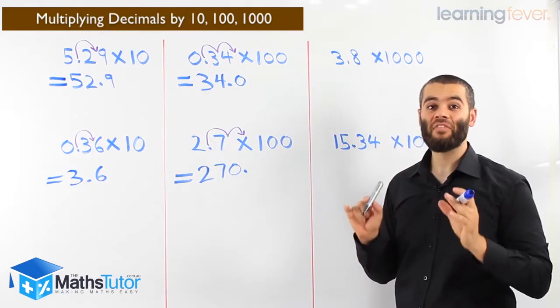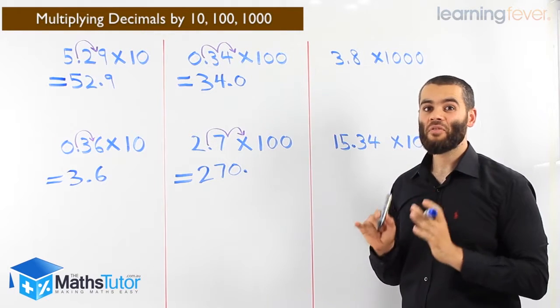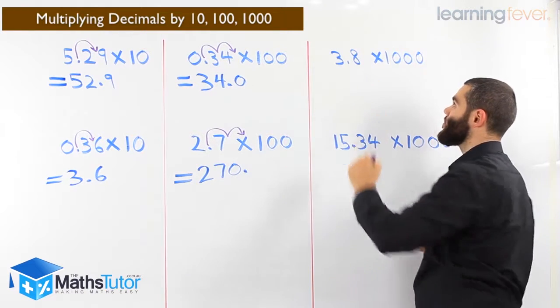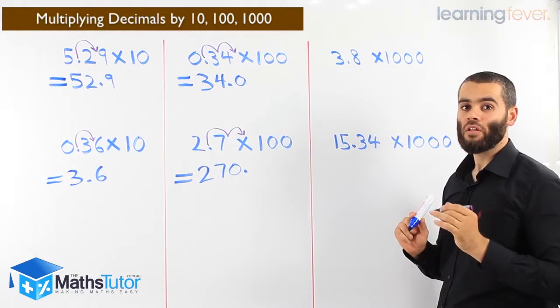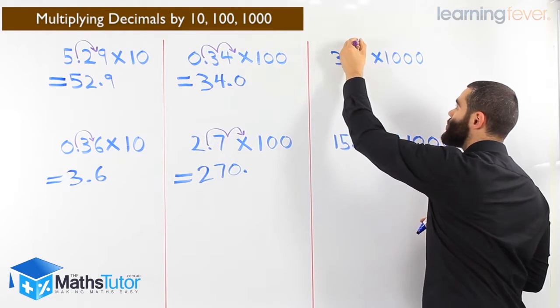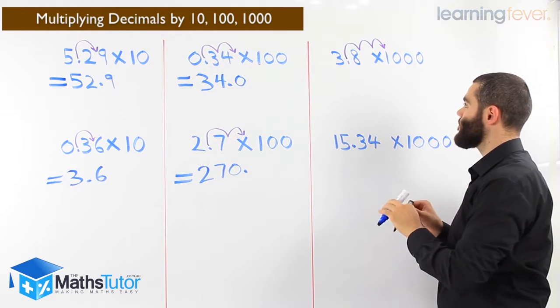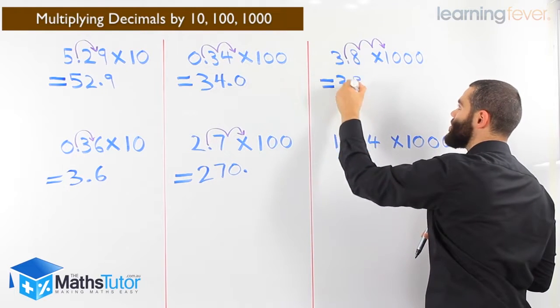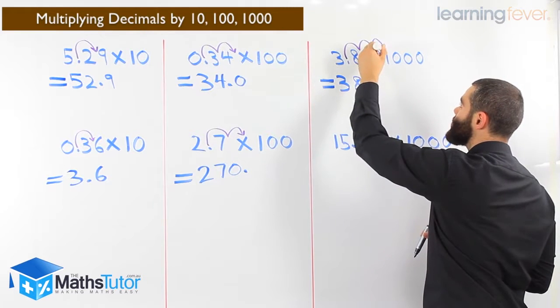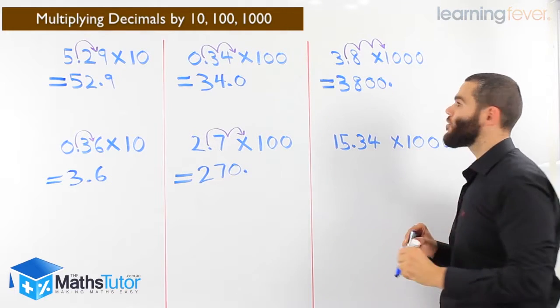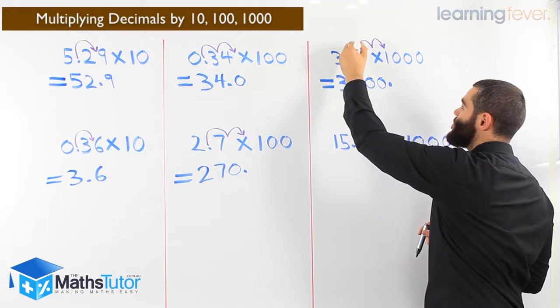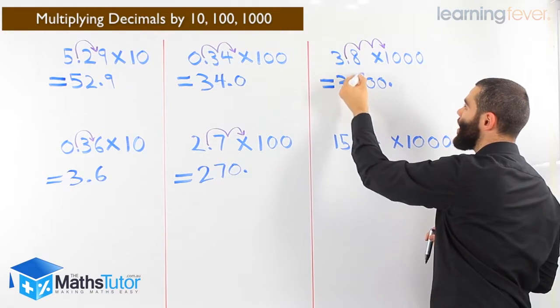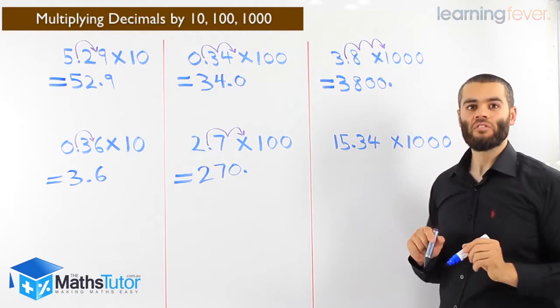3.8 times a thousand. Now, we have how many zeros? Three zeros. Which means how many jumps? Three jumps. Our point, we need to locate it. 3.8 times a thousand - we're moving the point three times to the right. One jump, two jumps, three jumps. Which means we have the three, we're jumping over the eight, we're jumping over the zero - nothing means zero there - and jumping over nothing as well, zero. We put our point: 3,800. Jump, jump, and one more jump because there are three zeros, meaning three jumps. It was between the three and the eight. Once, twice, three times. Our answer is 3,800.